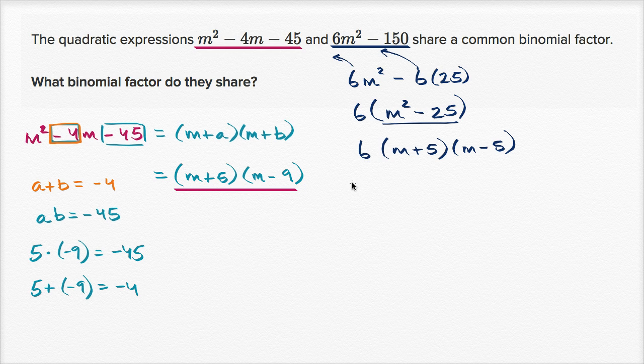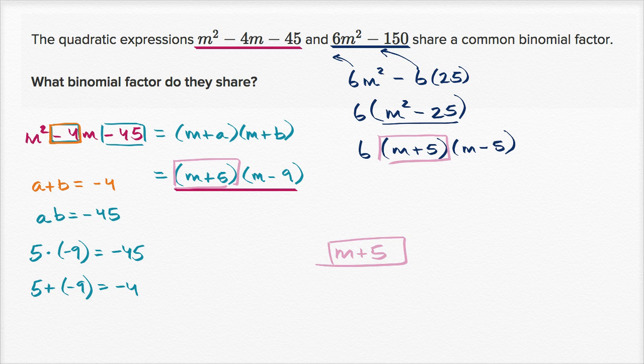And so what is their common binomial factor that they share? Well, you see when we factor it out, they both have m plus five. So m plus five is the binomial factor that they share.